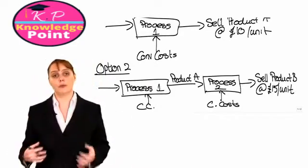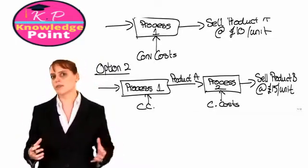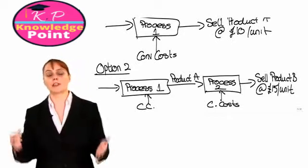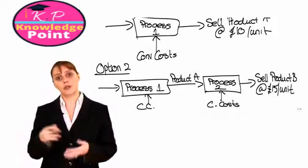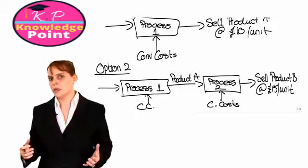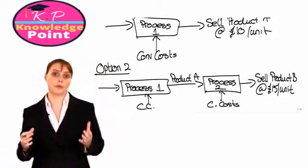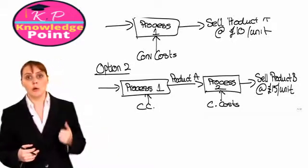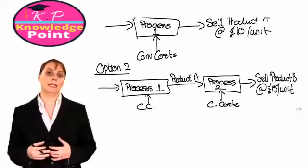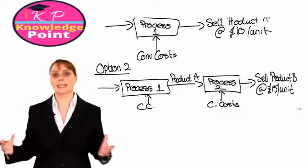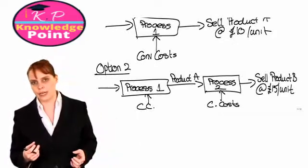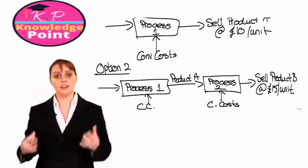In the exam, you may be presented with a question where you are given figures for a company and asked to decide which option is better. Should they sell product A after the first process, or should they do further processing and sell the better product at the end of process two? When making this decision, we need to consider two things: first, what are the additional costs of running the second process, and second, what is the additional revenue earned from selling the better product. If the additional revenue is higher than the additional costs, it makes sense to do the further processing.